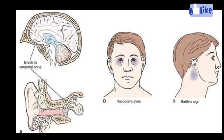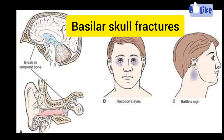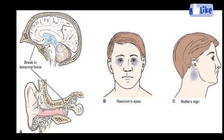Raccoon's eye: it is a useful indicator of basilar skull fractures. The condition is seen as periorbital ecchymosis from subconjunctival hemorrhage, which occurs secondary to blood dissecting from the disrupted skull cortex to the soft tissues of the periorbital region.